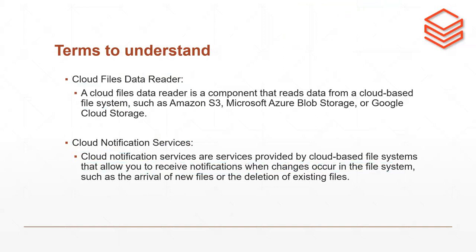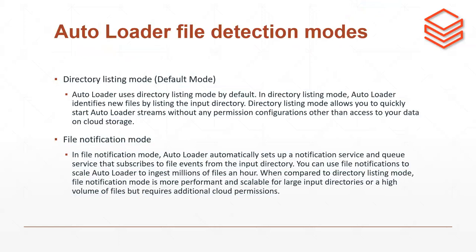There are two modes by which Autoloader can detect new file arrivals. The first is directory listing mode, which is the default mode. If you don't specify anything while reading or streaming data using Autoloader, it will default to directory listing mode. In this mode, Autoloader identifies new files by listing the input directory, and if any files have arrived based on a notification, it will load or stream the data without any additional permission configuration.